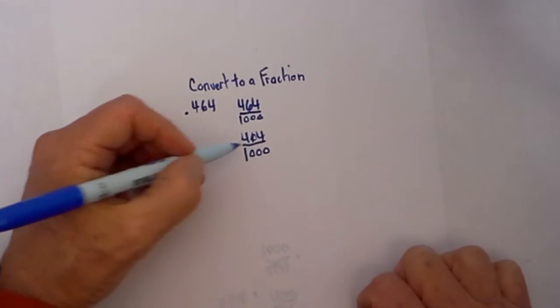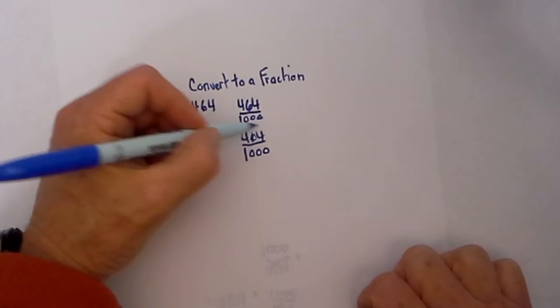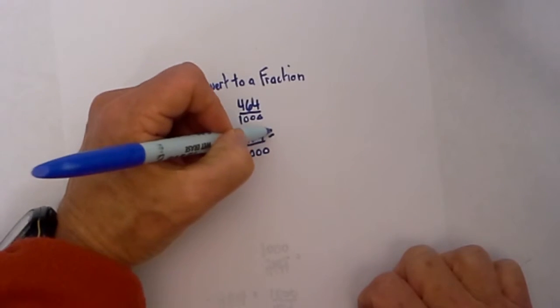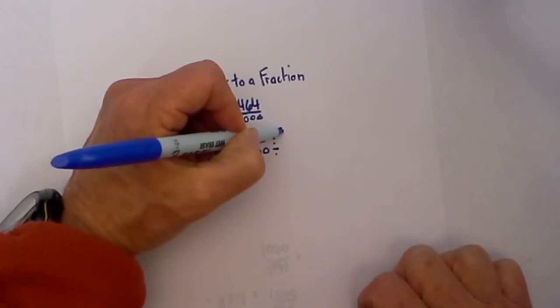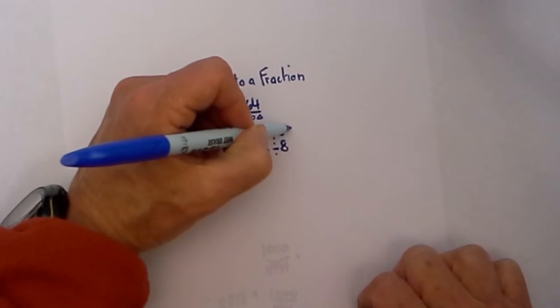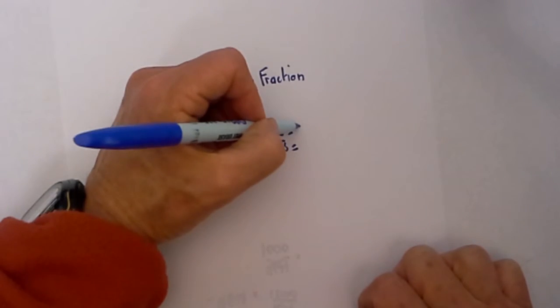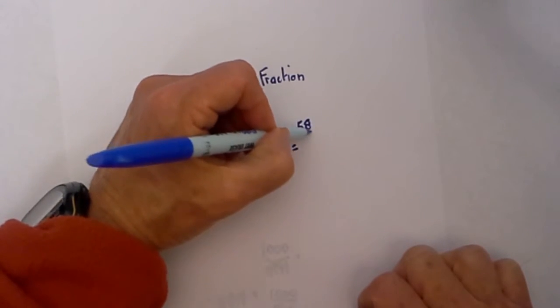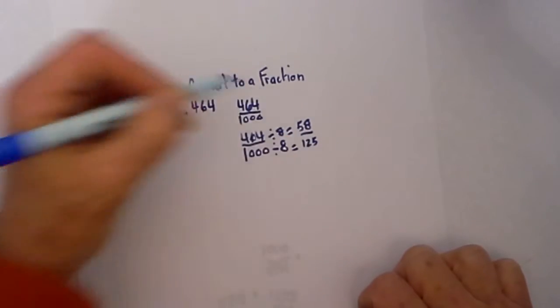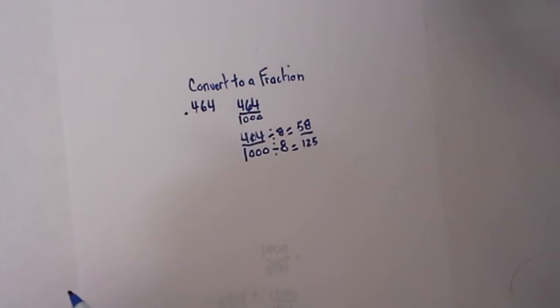Then once you have 464 over 1,000, you can divide both of these by 8. So if we divide both by 8, that would equal 58 over 125, and that is in its simplest form.